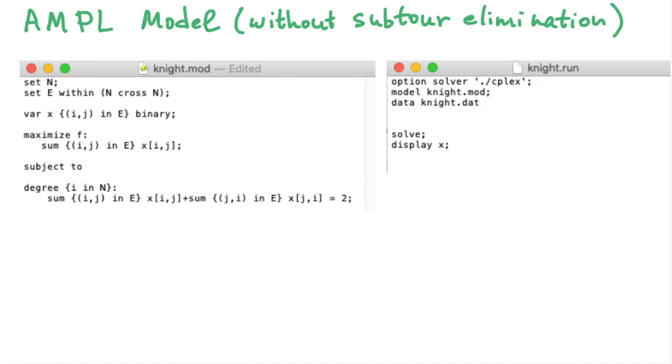Okay, here come the AMPL model and run files. So, we have the set of nodes N and the set of edges E, which is a subset of the set of ordered pairs of nodes. We have binary variables XIJ for each edge IJ. The objective is to maximize the sum of all the variables. Now, the degree constraint looks massive for some reason. Yes, since the set E was defined over ordered pairs of nodes, the pair IJ is not the same as JI. To make sure that we count all the neighbors J of I, we use two sums, one over the pairs IJ, and the other one over the pairs JI.